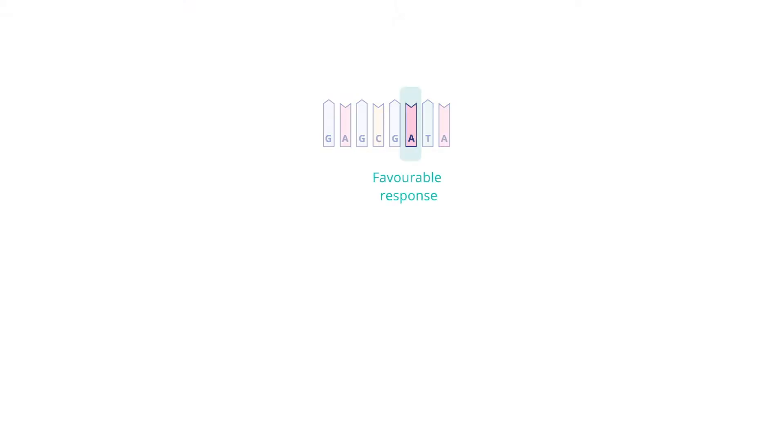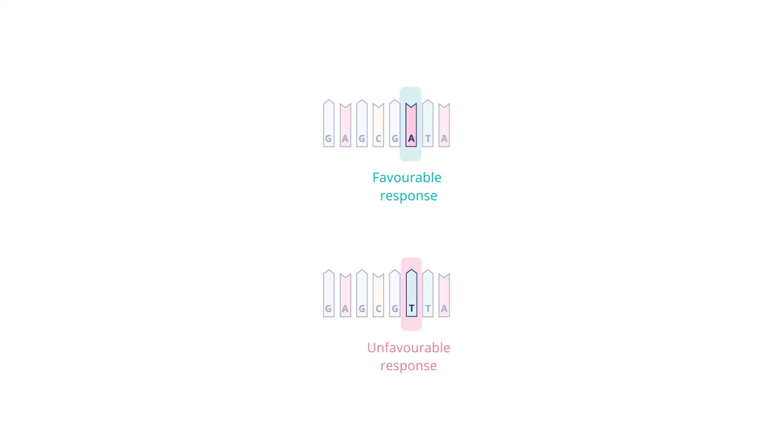So, how do we interpret that sequence? Scientists have learned that different combinations of nucleotides produce different outcomes. In other words, they know which genetic variant is linked to, say, a favorable response to carbs and which is linked to an unfavorable one.